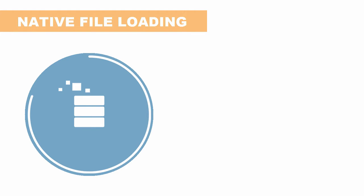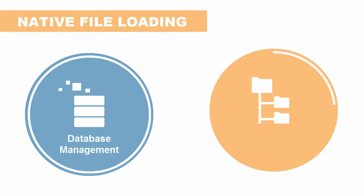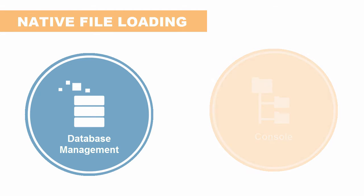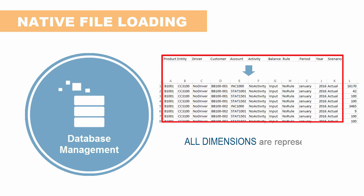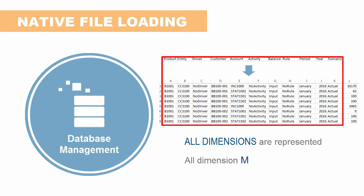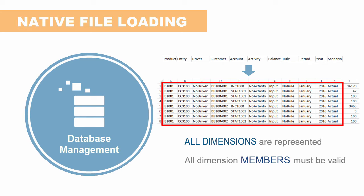Let's take a look at native file loading first. To create a basic model, you can load data and metadata from flat files directly to Profitability and Cost Management. You load data from database management. Your source files for data must be fully attributed so that all dimensions are represented, and all dimension members included in the files must be valid in the Profitability and Cost Management application for a successful data load.